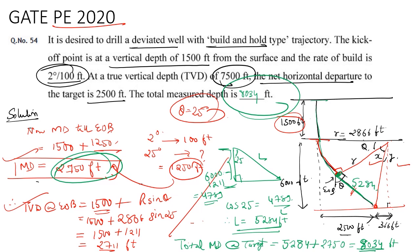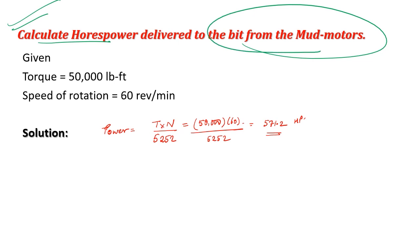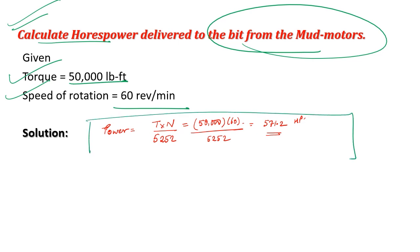In this particular question, we need to calculate the horsepower delivered to the bit from the mud motors. The torque is given as 50,000 pound-feet and speed of rotation is 60 revolutions per minute. We know the formula of power which is equal to T times N upon 5252. On placing the values, my answer would be 571.2 horsepower. All you need to do is remember this particular formula and also take special attention of the units.